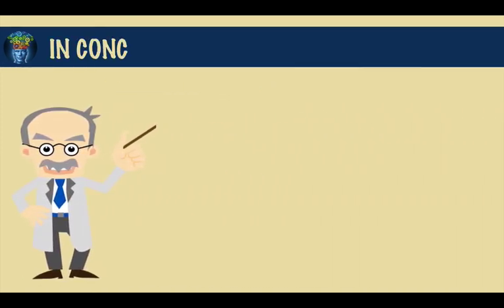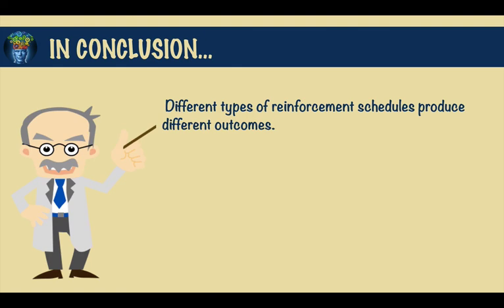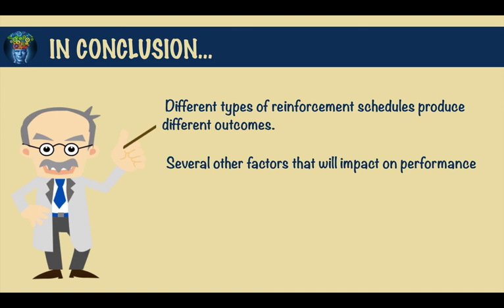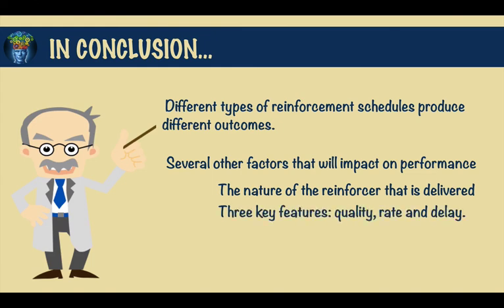So when you look at the four types of reinforcement schedules, you can clearly see that these produce different outcomes. In addition, there are several other factors that will impact performance. Some of these include the nature of the reinforcer delivered and three key features: quality, rate, and delay. Research shows that higher quality reinforcers and short delays yield better results. The amount of the reinforcer is also a factor — we tend to prefer large amounts over small ones. For instance, the salesperson working on commission is more likely to invest time and effort in selling larger items with larger commissions. And regardless of the reward, we have to want to perform the behavior in the first place, and we have to be motivated to do so.